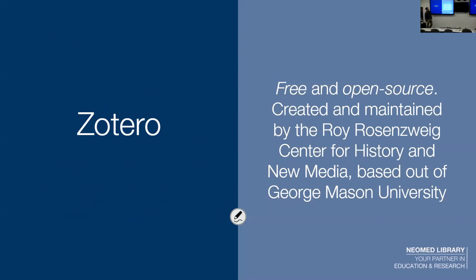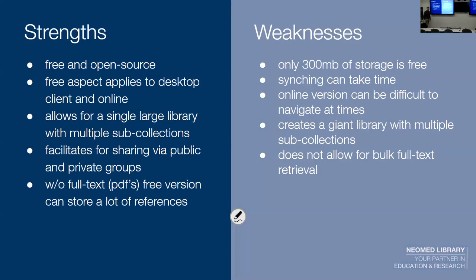As a little more introduction: Zotero was created out of a university, which is kind of a fun thing. This center has also created a digital library platform, but Zotero is their most widespread product — it's been in operation since 2006, so it's been going on a decade and they're just updating their interface. It has some good philanthropy behind it, like the Carnegie Foundation. These are the main strengths and weaknesses in my mind.